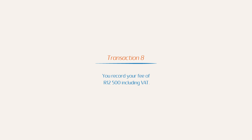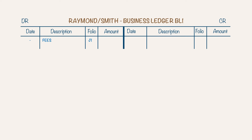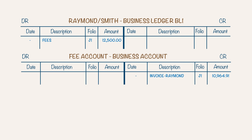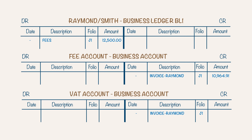Transaction 8: You record your fee of R12,500 including VAT. This transaction is recorded in the business ledger account. You debit your business ledger for Raymond with the full amount as it is due and receivable from him. You credit the fee account with R10,964.91, calculated as R12,500 ÷ 114 × 100. You credit the VAT account with R1,535.09, calculated as R12,500 ÷ 114 × 14.